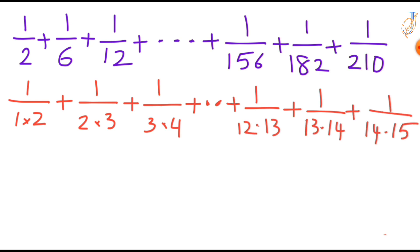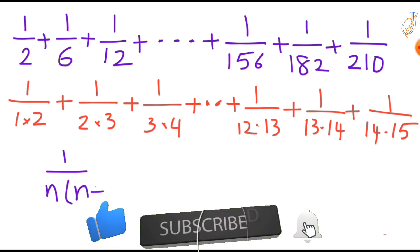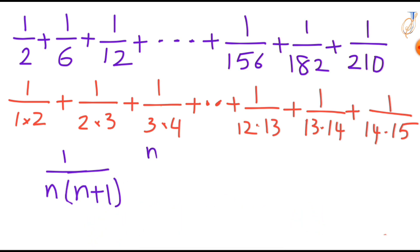Let's start into the detail steps to find the sum. Each term in the series is in the form of 1 over n times n plus 1. If you substitute n equal to 1, then you will get 1 over 1 times 1 plus 1 is 2. Similarly, if you substitute 2, then you will get 2 times 2 plus 1 is 3. That is your second term. Like that, if you substitute n equal to 3, you will get 1 over 3 times 4, and so on. So it is in the form of 1 over n times n plus 1.